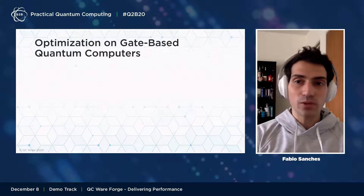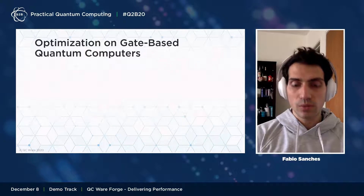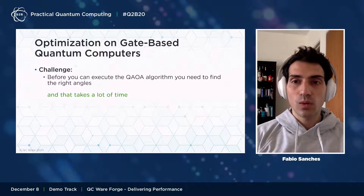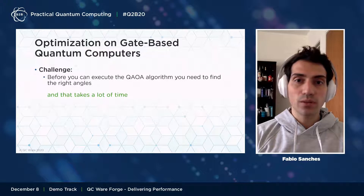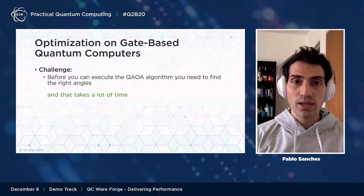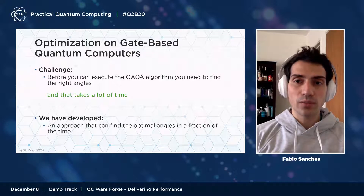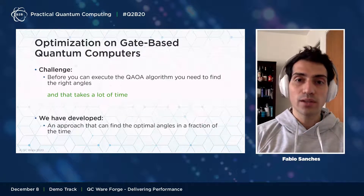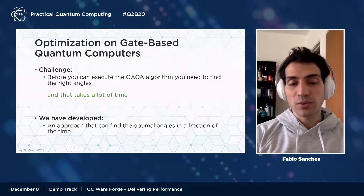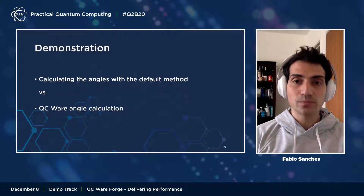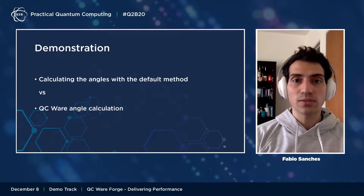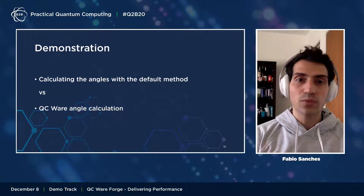Now I want to talk about another way of solving optimization problems on quantum computers — using circuit model devices. One promising algorithm for near-term quantum computers is the quantum approximate optimization algorithm, QAOA. For those familiar with QAOA, you know you need to tune certain parameters or angles to get good solutions, which can take quite a bit of time. What we've developed at QCWare is an algorithm that finds the optimal angles for the QAOA, specifically for short QAOA circuits, and does so in a fraction of the time. Natalie is going to demo this functionality.